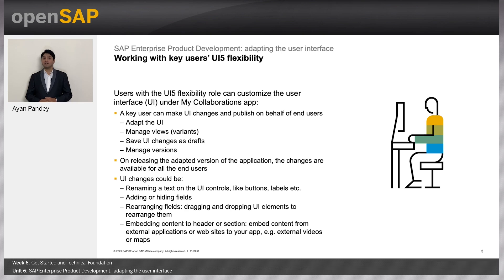A key user can make UI changes and publish on behalf of the end-users — like adapt the UI managed views or the variants, save UI changes, save UI changes as drafts, and manage versions. On releasing the adapted version of the application, the changes are also available for all the end-users.